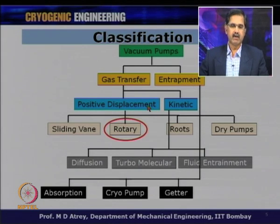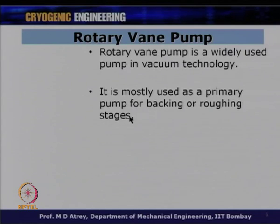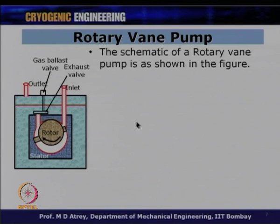Let us see how a rotary vane pump works. The rotary vane pump is widely used in vacuum technology and is mostly used as a primary pump for backing or roughing stages, achieving minus two to minus three levels of vacuum. This pump falls under gas transfer with positive displacement characteristics — it has defined directions from which gas is taken and delivered to atmosphere. The vacuum pump type will decide the maximum SP it can deliver, and the rotary pump is one of the most common pumps used.